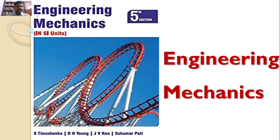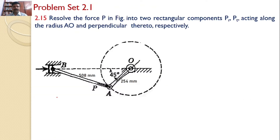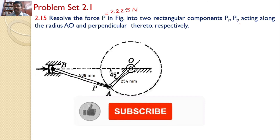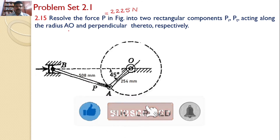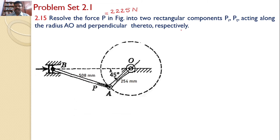Welcome to RK Tutorials. Solutions to Engineering Mechanics 5th Edition by S. Timoshenko, D.H. Young, J.V. Rao and Sukumar Patti. In this video, we will solve problem set 2.1, problem number 2.15: Resolve the force P, i.e. 2225 N, into two rectangular components Pr and Pt acting along the radius AO and perpendicular thereto respectively.